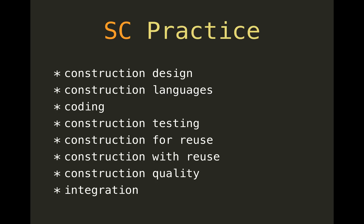Construction measurement is basically how you see what kind of progress you've made. The practical considerations in software construction include construction design — applying design patterns and abstract thinking — construction languages such as programming languages, domain-specific languages, and modeling languages, as well as the actual coding, testing, construction for reuse, construction with reuse, quality of construction, and integration of newly constructed components.